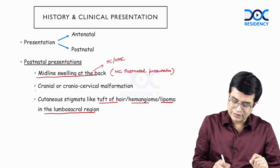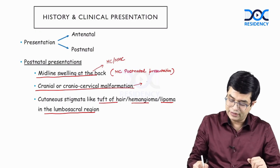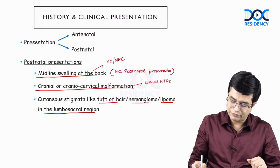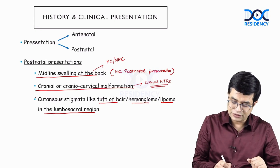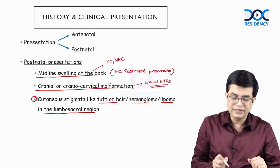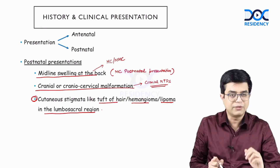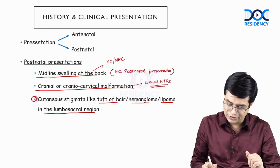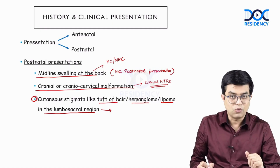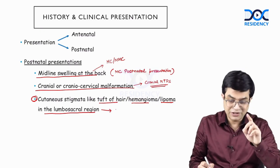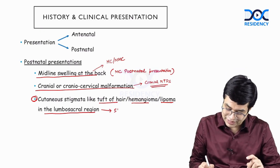If there is a cranial or cranio-cervical malformation, then you will think of cranial neural tube defects — you will not think of caudal neural tube defects. On the other hand, if cutaneous stigmata are present, like a tuft of hair, lipomas, or hemangiomas in the lumbosacral region, then what will you think of?